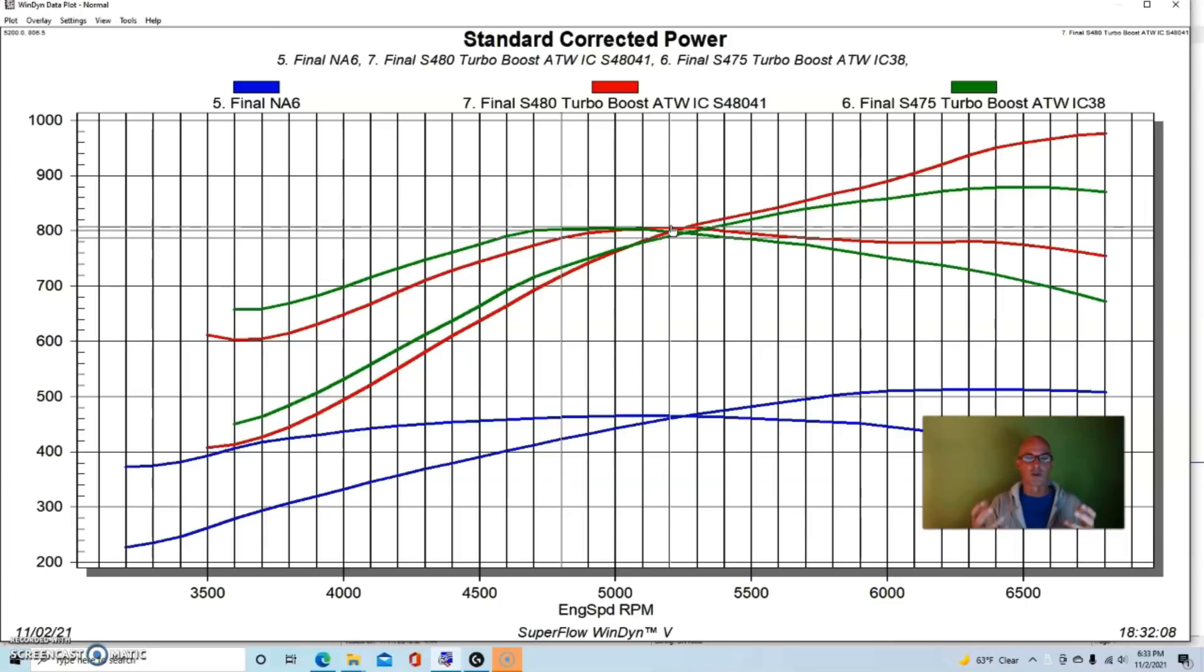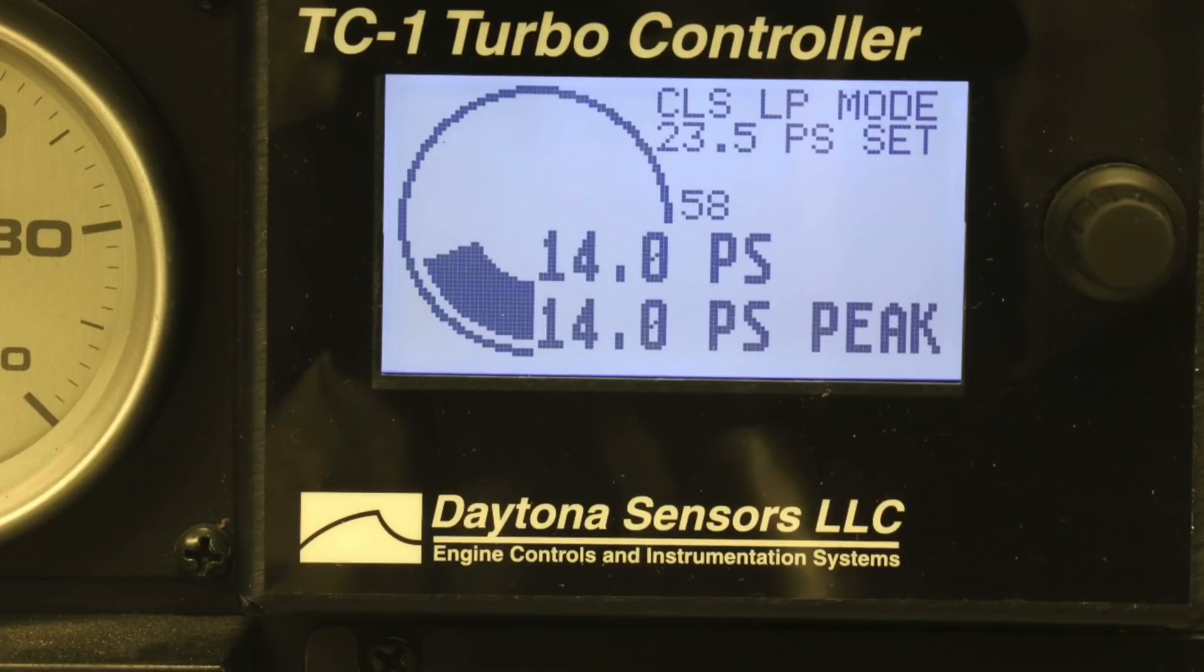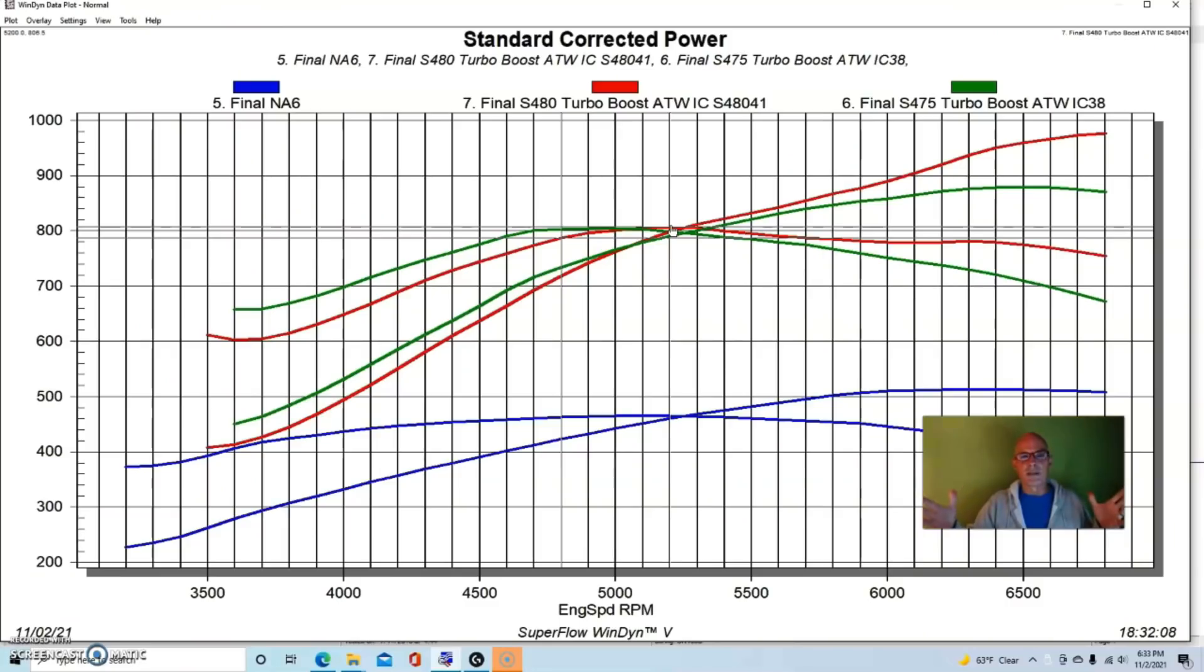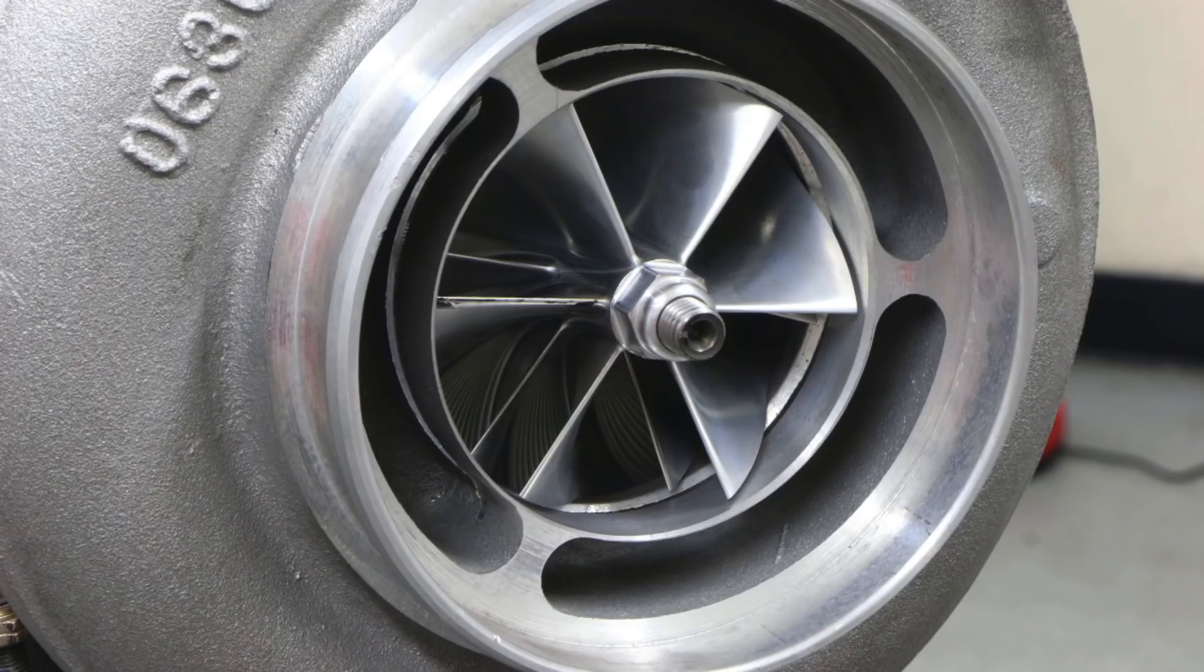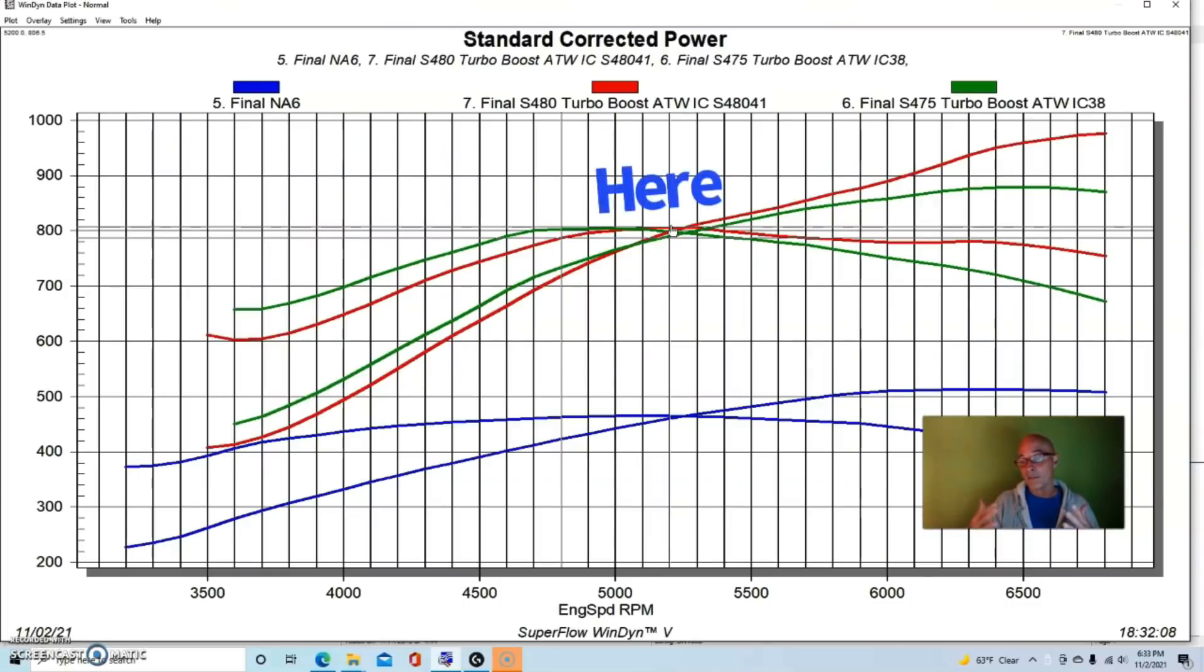But what I should have done on this test is I should have run this thing with an electronic wastegate controller, which we weren't using so much back then when I ran this test. I should have run the TC1 controller and we would have gotten a better test between the S475 and the S480. Because actually you can see in the middle part here where they were both making basically the same boost, yeah they both made basically the same power.